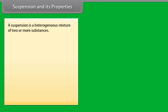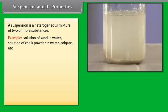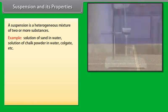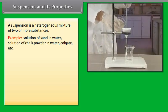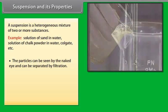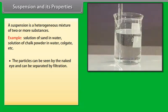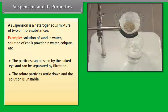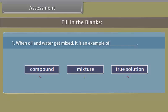Suspension and its properties. A suspension is a heterogeneous mixture of two or more substances. Examples include muddy water and Colgate toothpaste. The particles can be seen by the naked eye and can be separated by filtration. The solute particles settle down and the solution is unstable. The particles scatter a beam of light passing through it and the path of light is visible in the solution.